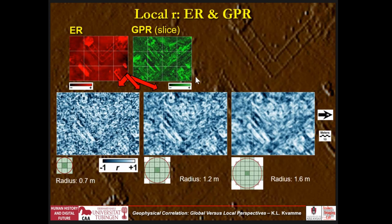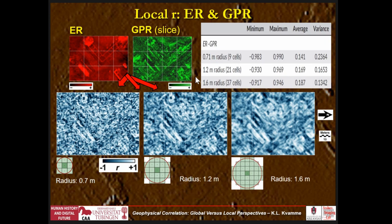Here's what a local correlation looks like between earth resistance and GPR for the small neighborhood and the large neighborhood. You get a smoothing effect with the larger neighborhood. White means high positive correlation and black means high negative correlation. We see some really strong patterns of relationship — does high resistance influence higher GPR amplitudes? There are theoretical nuances here that could be quite interesting to explore. Looking at the statistics, correlations go from minus 0.98 to plus 0.99 for the narrow window. As the radius gets larger, the variance goes down, so we see the smoothing effect quantitatively.